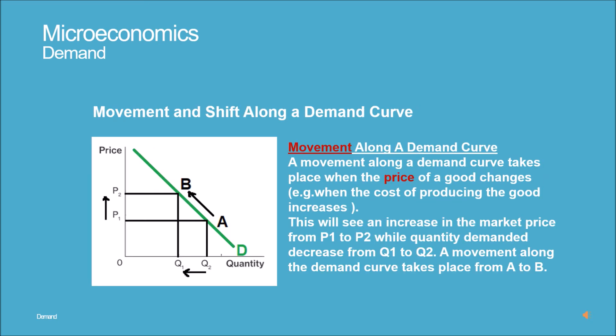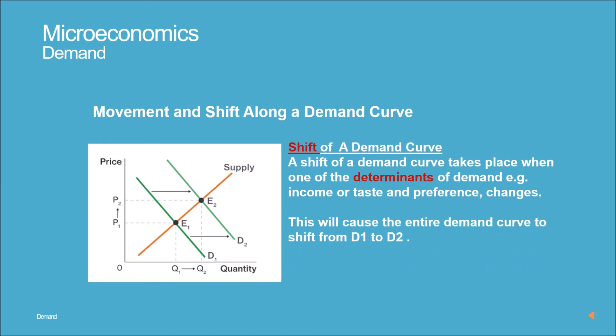Movement along a demand curve: a movement along a demand curve takes place when the price of a good changes — for example, when the cost of producing the good increases, this will cause an increase in market price from P1 to P2, while quantity demanded decreases from Q1 to Q2. A movement along the demand curve takes place from point A to point B.